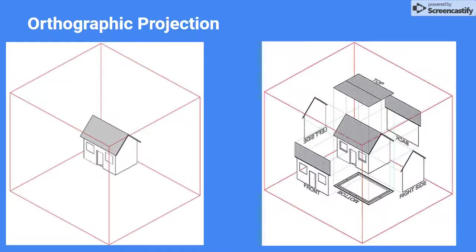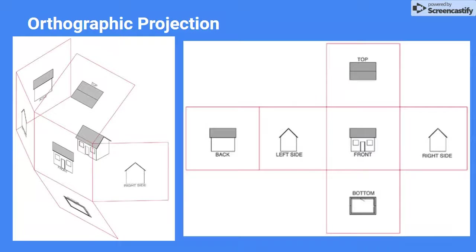Here we start with a house in the glass box. Then we see each of the six sides of the house get projected onto the walls of the box. Now we can see what happens if the box is unfolded and laid flat. The six orthographic projections are arranged into a six-view orthographic drawing of the house, with perfect alignment and orientation.